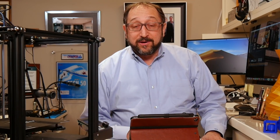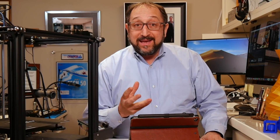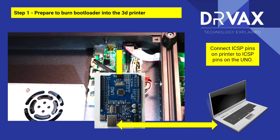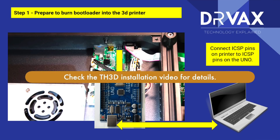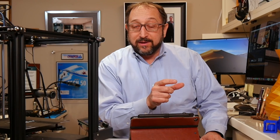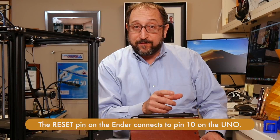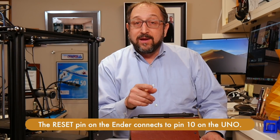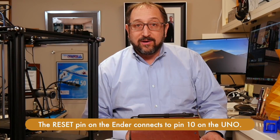Now that we have the back off the Ender 5, we can begin connecting the UNO to the control board. To begin with, we have to connect the six-pin header — five of those six pins, as outlined in the detailed instruction videos — to five of those six pins on the Ender 5. The sixth pin on the Ender 5 connects to another location on the UNO.